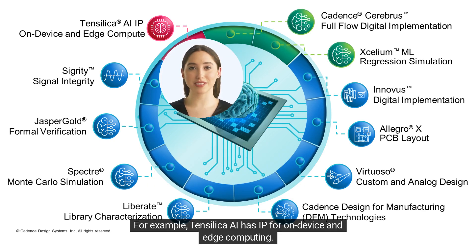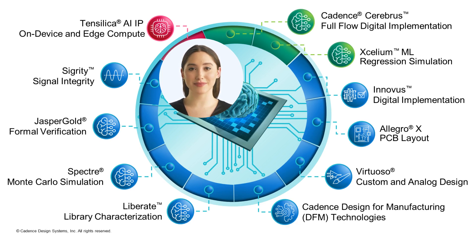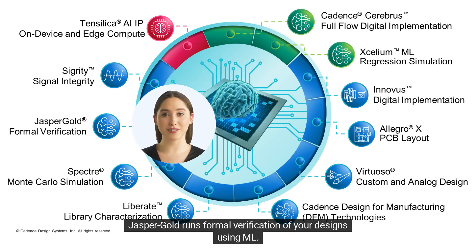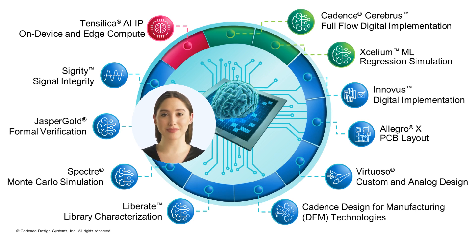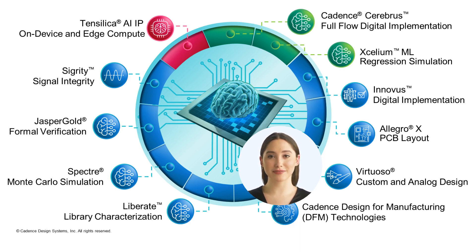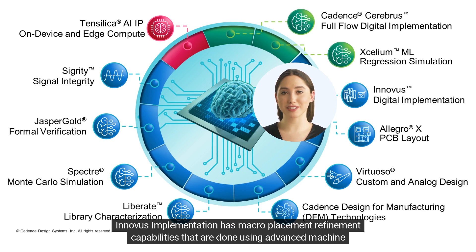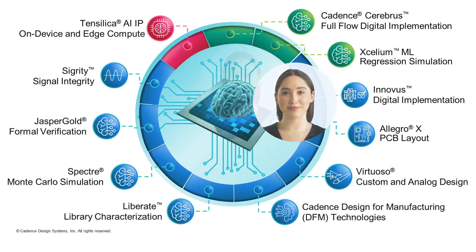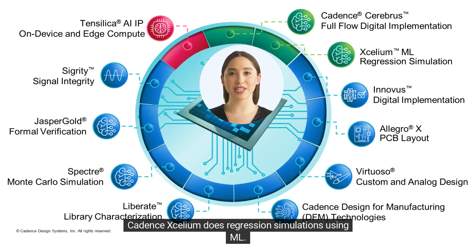For example, Tensilica AI has IP for on-device and edge computing. Jasper Gold runs formal verification of your designs using ML. Virtuoso Studio allows you to plan designs at next-generation nodes more easily. Innovus implementation has macro-placement refinement capabilities done using advanced machine learning algorithms. Cadence Exilium does regression simulations using ML.